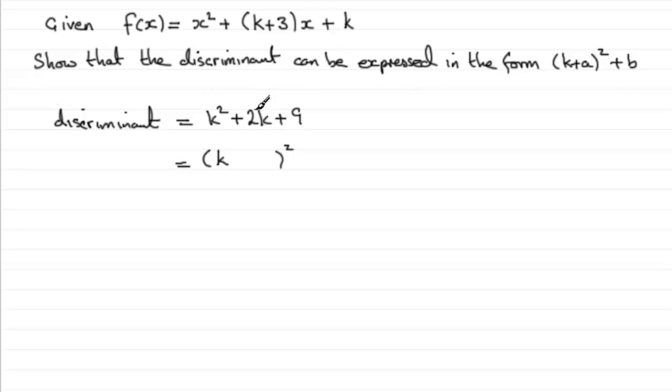We just halve the coefficient of this value, the number in front of it, which is a 2. So if we halve that, we've got a 1.